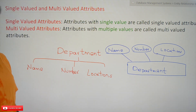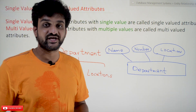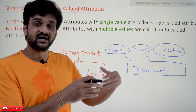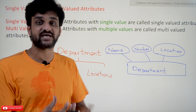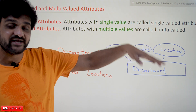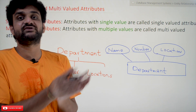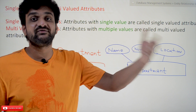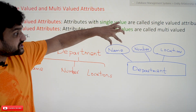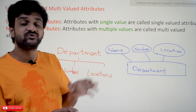Which one is a single valued attribute? Name is a single valued attribute — it is going to have only one name. For example, if you take a financial department, can that department have two names? No. Similarly, the department number: can a financial department have number three and four at the same time? No, it is not possible. So department number and department name are both single valued attributes.